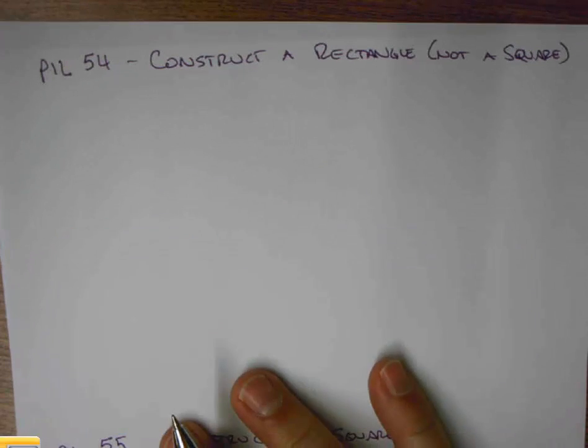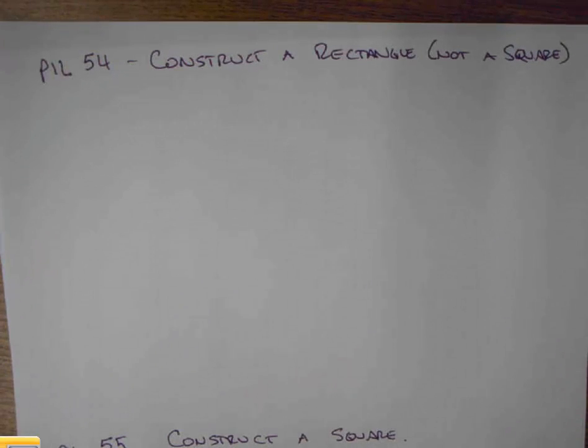Hi, this is Mr. Erlen, continuing in our effort to construct appropriate parallel and intersecting line elements. We're going to do problem 54, constructing a rectangle that's not a square.